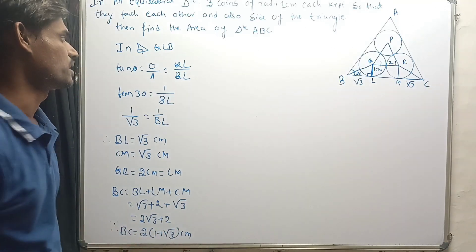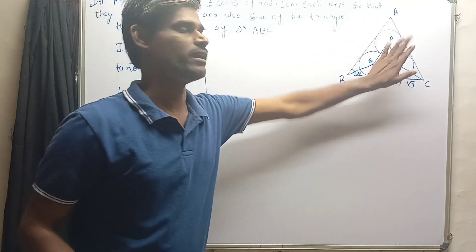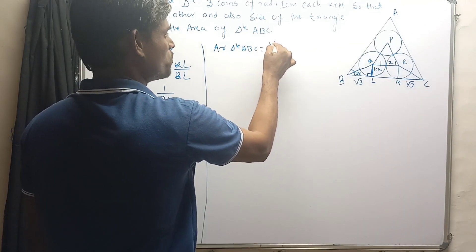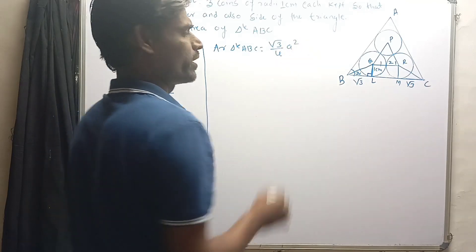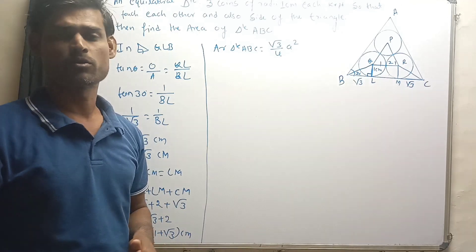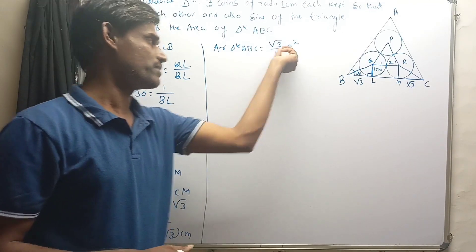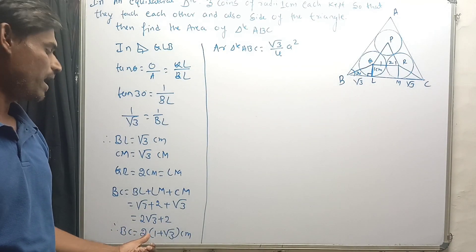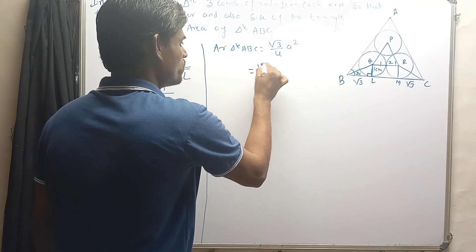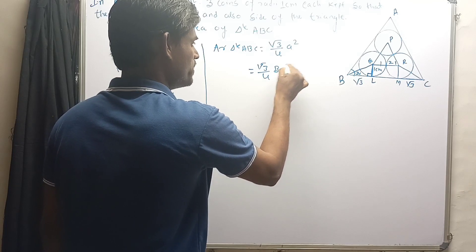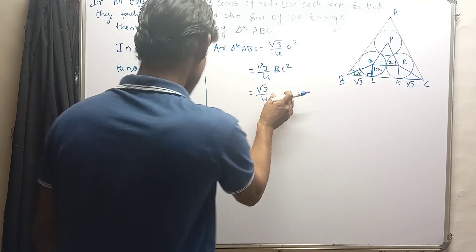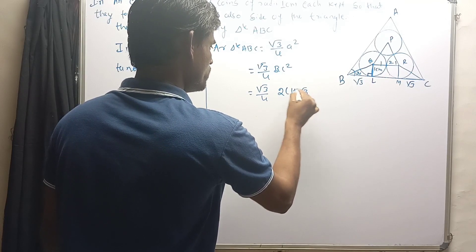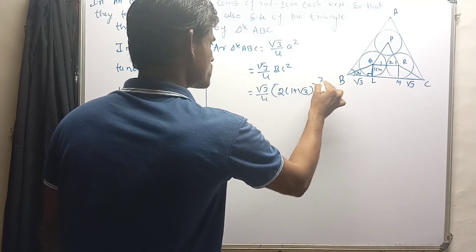Now let's find the area of triangle ABC. We know that the area of an equilateral triangle equals (√3/4) × a², where a is the side length. Here, a = BC = 2(1 + √3). Let's substitute the value of BC: area = (√3/4) × [2(1 + √3)]² = (√3/4) × 4 × (1 + √3)².